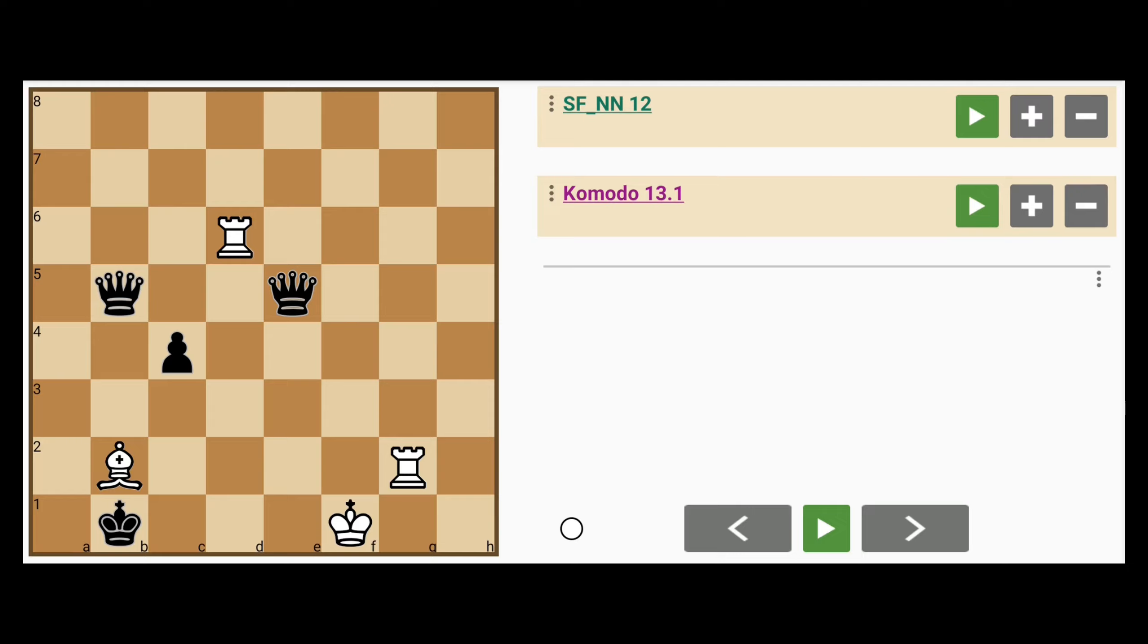Perhaps the obvious thing to do here would be bishop captures e5. But if white does this, instead of recapturing with the other queen, black would just play c3 check, perhaps rook to e2 intervening, c2.